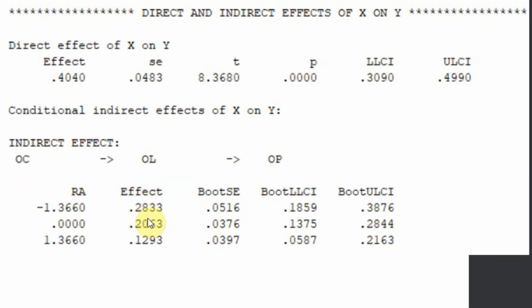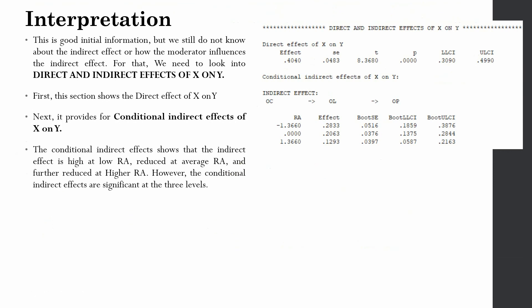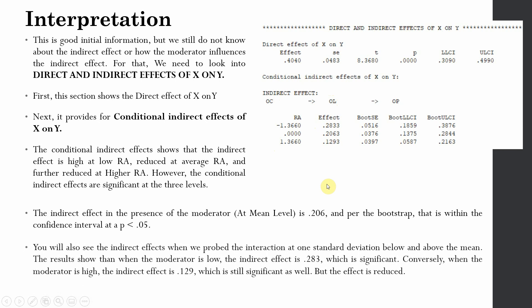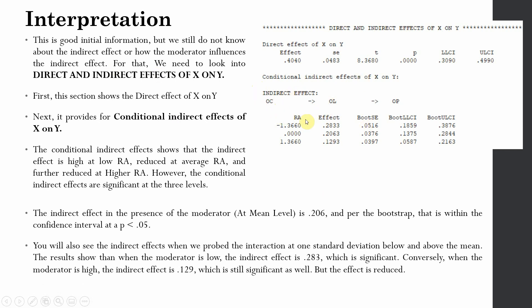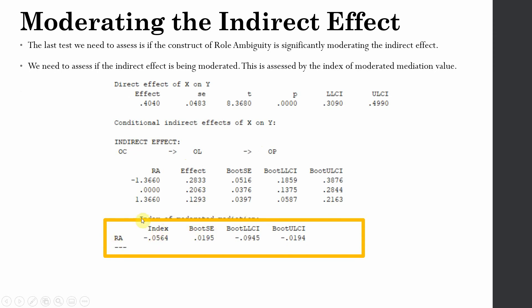We can see that at low role ambiguity the indirect effect of OC on OP through OL is stronger, and this effect decreases with the increase in role ambiguity. What we are interested in is whether this indirect effect significantly changes with the change in the moderator. To assess this, we need the index of moderated mediation. The indirect effect at the mean level is 0.206, and per bootstrap all three levels are significant. Let's now look at the moderated mediation index in the output.